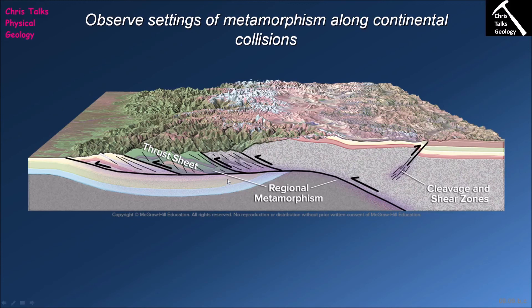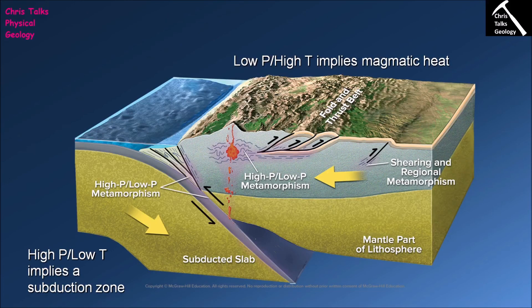At a continent-continent convergent boundary there is very little magma present, so we are unlikely to get large amounts of contact metamorphism. This contrasts with an ocean-continent convergent boundary. At a continent-continent boundary we have a lot of regional metamorphism primarily due to burial and shearing, with perhaps a little related to hydrothermal fluid movement. In contrast, at an ocean-continent convergent plate boundary we have lots of subduction-related metamorphism, lots of regional metamorphism from crustal thickening and burial, and also contact metamorphism from the movement of magma through the crust.